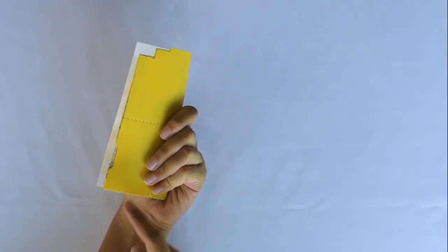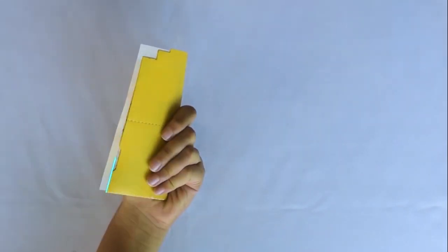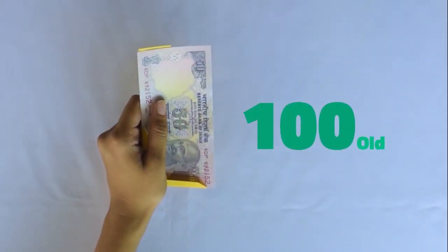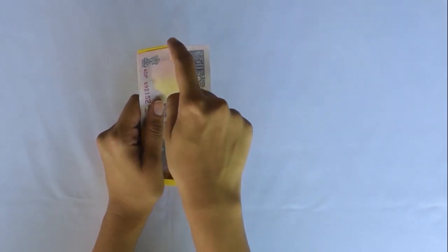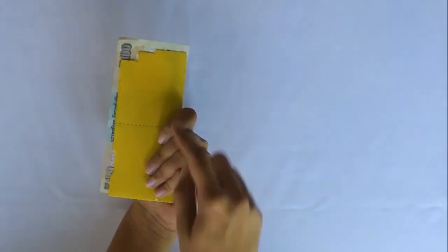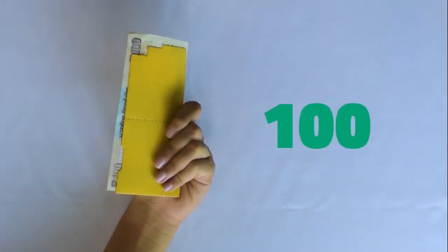If it is wider than the template, it is an old note of denomination either 50 or 100. If this note aligns with the middle step, its denomination is 50. If the length goes beyond the template, its denomination is 100.